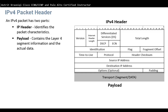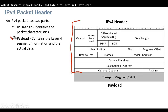Now an IPv4 packet has two parts: the IPv4 header, which is at the top here — this is the IPv4 header and it identifies the packet characteristics. And then we have the payload. The payload has segment information as well as the actual data.